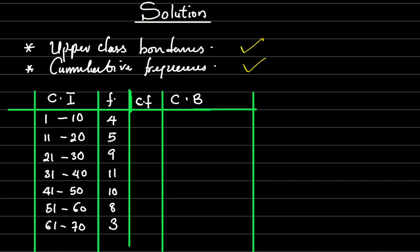The first frequency for the class interval 1 to 10 is 4, so the cumulative frequency is 4. Then 5 plus 4 gives 9, 9 plus 9 gives 18, continuing to 29, 39, then 47, and the last is 50. Take note: whenever you do this and the last entry under the cumulative frequency column is not equal to the total frequency, you are wrong. Here the total frequency is 50 and the last entry is also 50, so we are correct.